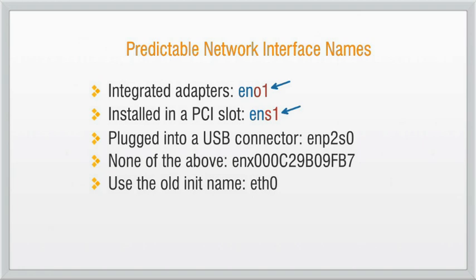If the first two options are not applicable — for example, if a network interface is connected via USB rather than a slot or motherboard — then systemd will try to construct an alias using the name of the physical connector. For example, 'en' indicates an Ethernet interface, 'p2' identifies bus 2 (in this case USB bus 2), and 's0' indicates slot 0 on that bus.